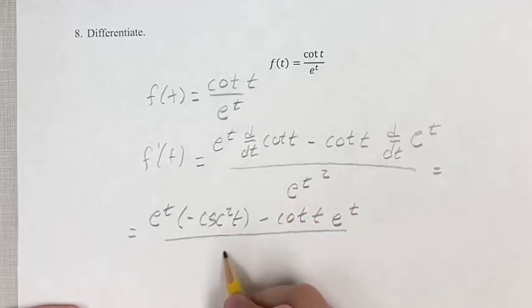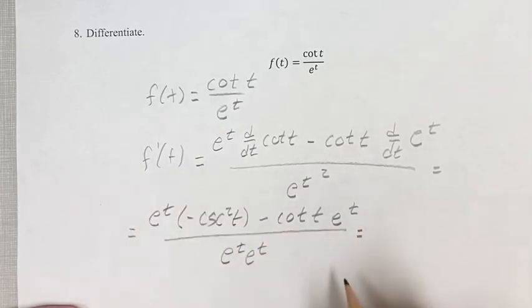And this is all over e to the t squared, which is e to the t times e to the t. The reason I'm writing it like this is because we can pull an e to the t from the top.